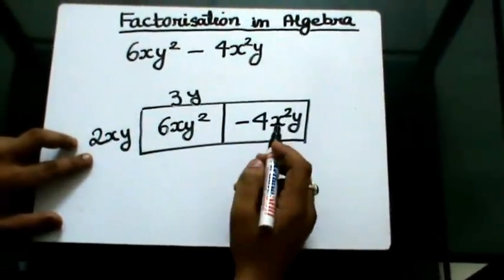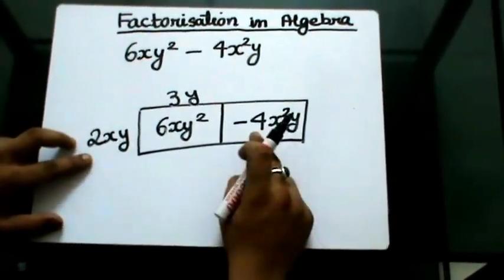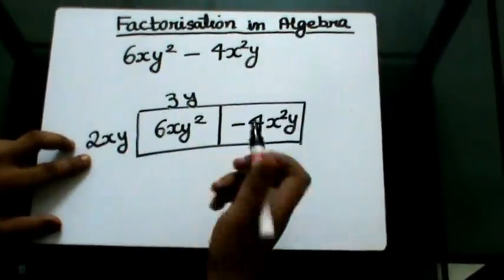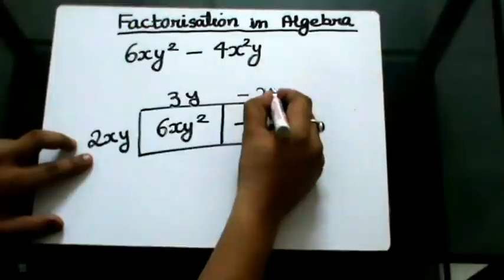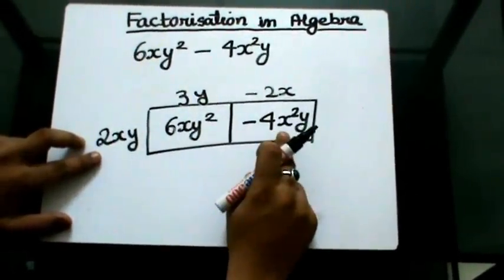Similarly, which term will give me -4x²y when I multiply it with 2xy? It will be -2x. If I multiply these two, I get -4x²y.